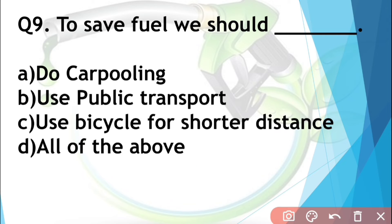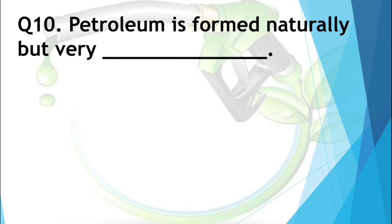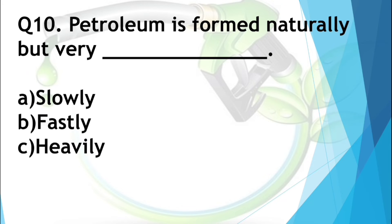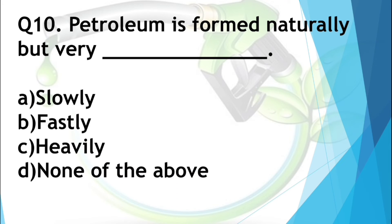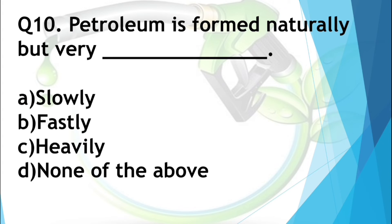Question number ten: Petroleum is formed naturally but very — options are slowly, fastly, heavily, or none of the above. We know petroleum is a non-renewable resource of energy and it forms naturally but very slowly. So A is the answer.